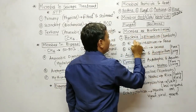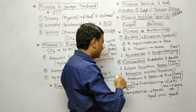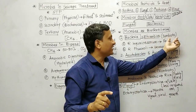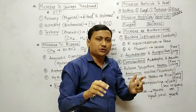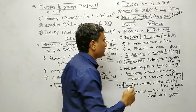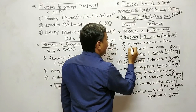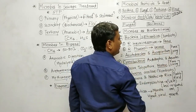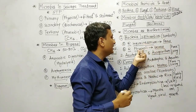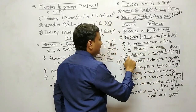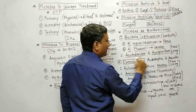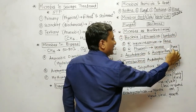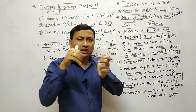The next topic is microbes as biofertilizers. There are three categories: bacterial biofertilizers, cyanobacterial biofertilizers, and fungal biofertilizers. Under bacterial biofertilizers, the classic example is Rhizobia — a symbiotic bacteria that forms nodules in leguminous plant roots. Two species: Rhizobium leguminosarum is specific to peas, while R. phaseoli is specific to beans. Another example is Azotobacter and Azospirillum, which are free-living bacteria.